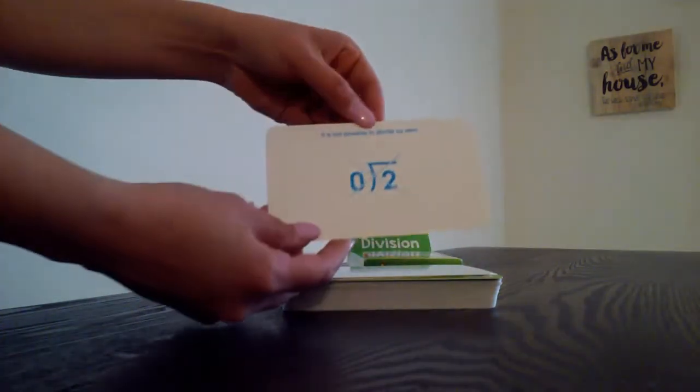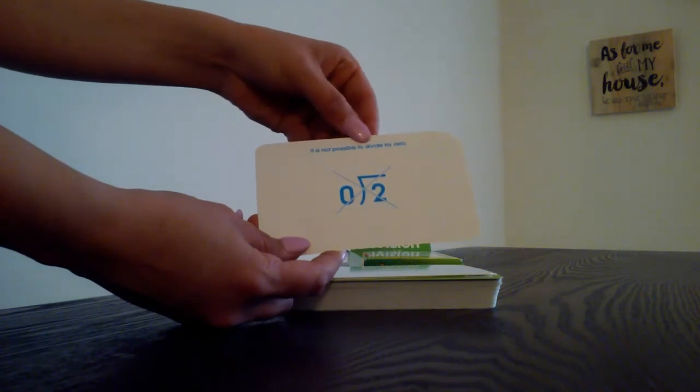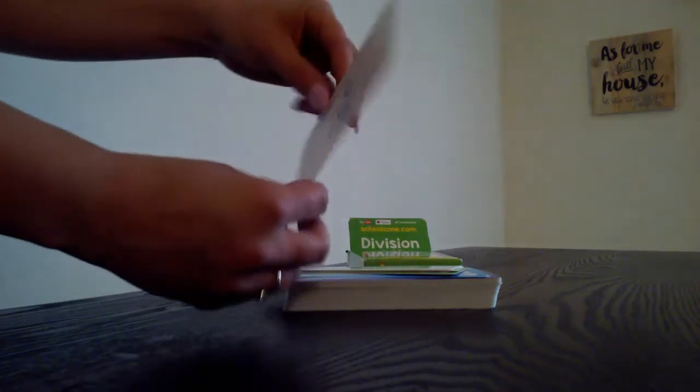And then this last card here just simply lets you and your child know it's not possible to divide by zero. So if you ever see a problem like that, it's not possible to solve.